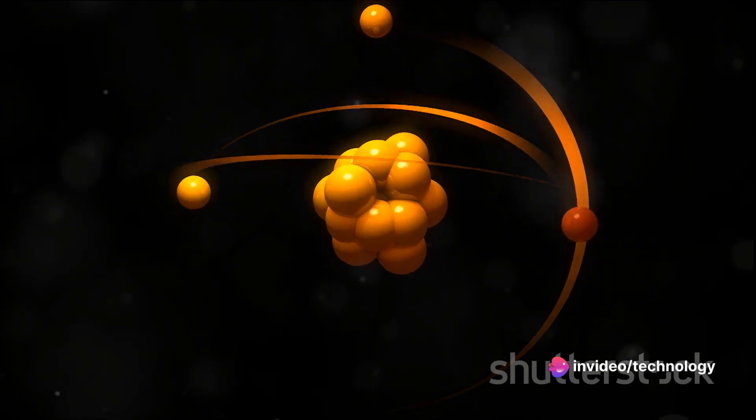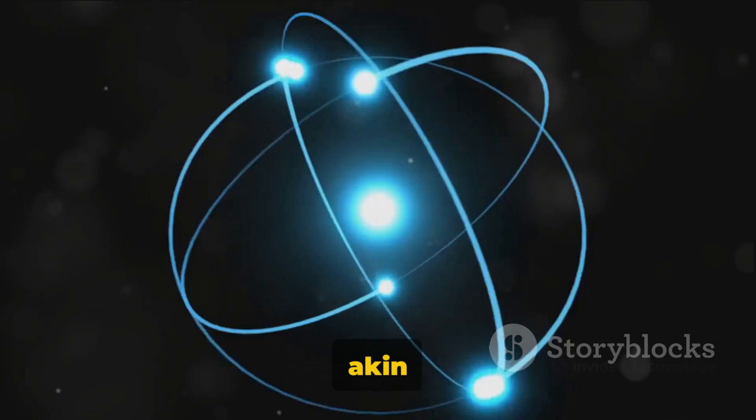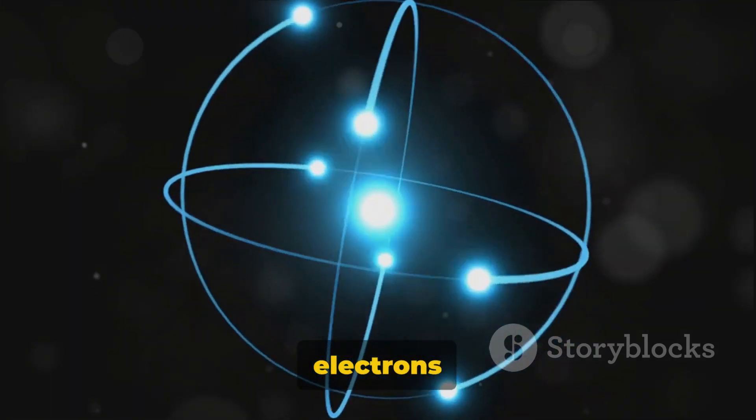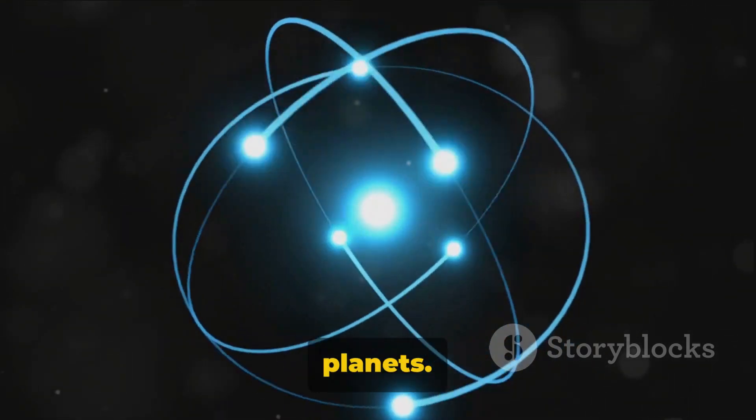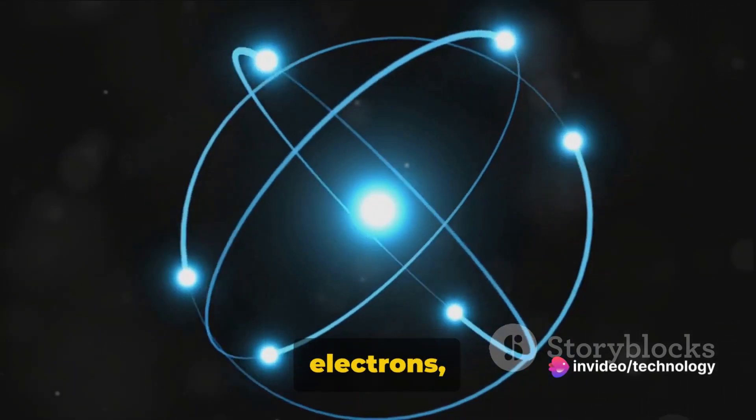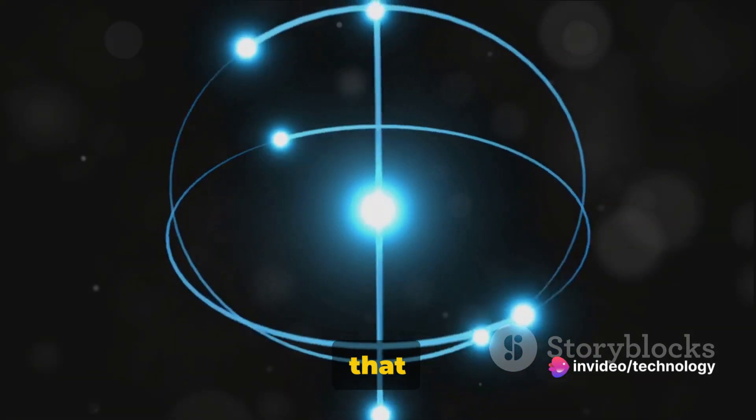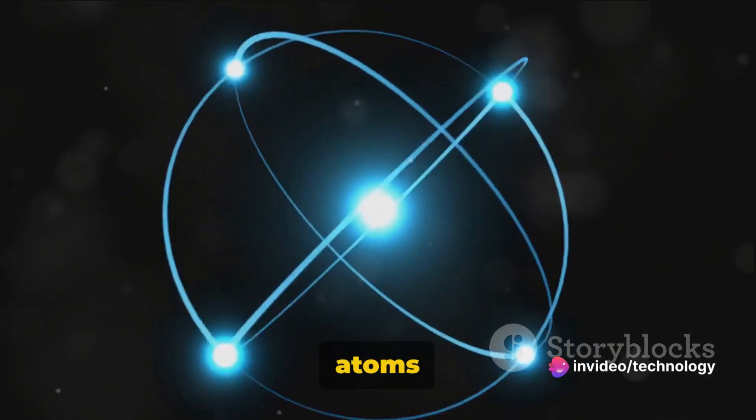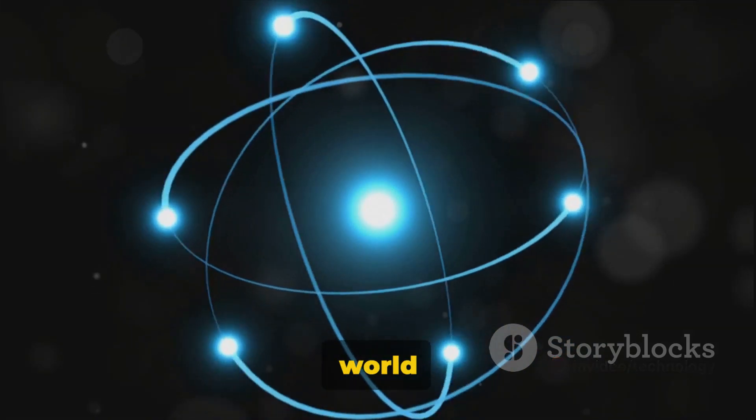Electrons are found in atoms, the fundamental units of matter. Picture an atom as a miniature solar system with a nucleus at the center, akin to the sun, and electrons orbiting around it, just like planets. The nucleus is composed of protons and neutrons, but it's the electrons, with their negative charge, that play a crucial role in how atoms interact with each other to form the world we know.